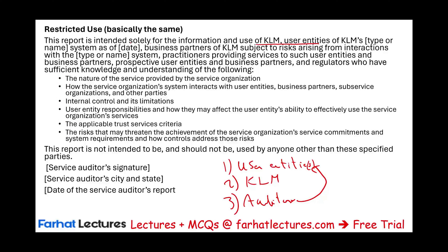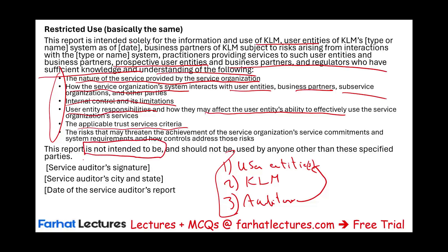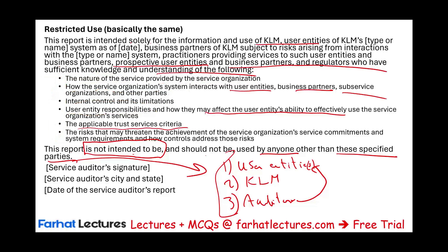This report is intended solely for these groups and business partners. Prospective user entities, business partners, and regulators must have sufficient knowledge and understanding of the following. So if you want to use this report, you have to have knowledge. If you're outside this group, you have to have knowledge of the nature of services provided by the service organization, how the service organization system interacts with user entities, business partners, subservice organizations, and other parties, internal control and its limitations, user entity responsibilities, and the applicable trust service criteria. We specify that the report is not intended to be used by anyone other than the specified parties, because the assumption is they are aware of and understand all of these points.